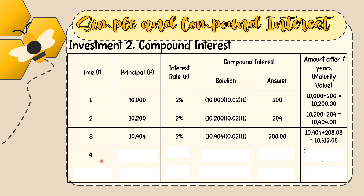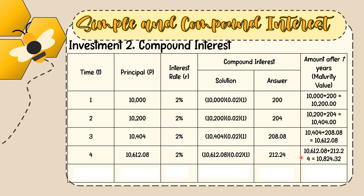For year 4 of compound interest, the principal is the previous maturity value of 10,612.08. Interest rate remains 2%. Solution: 10,612.08 × 0.02 × 1 = 212.24. Adding principal and interest: 10,612.08 + 212.24 = 10,824.32 pesos after year 4.